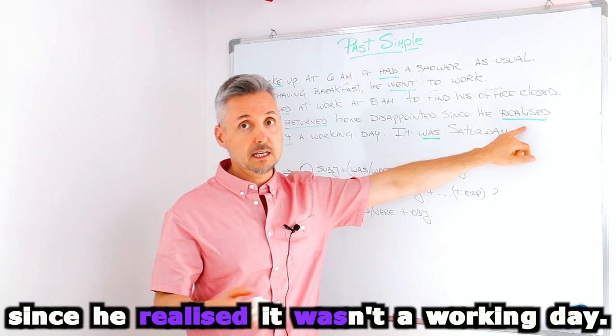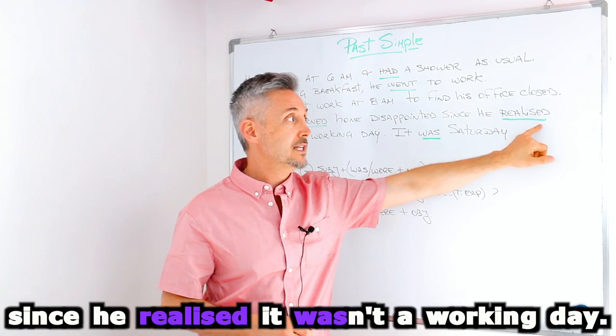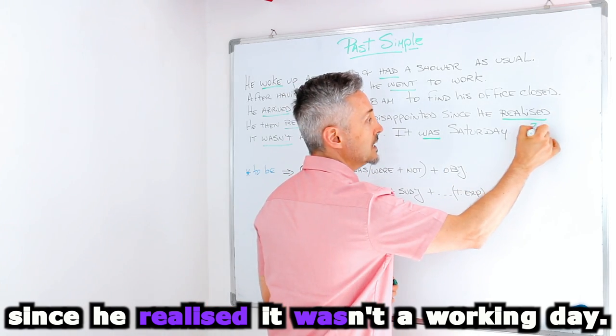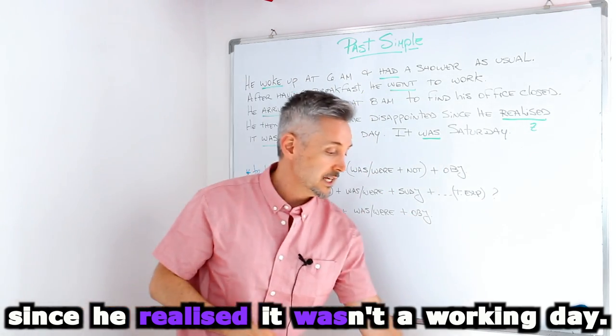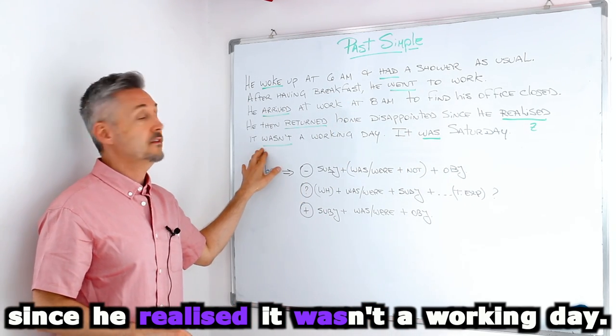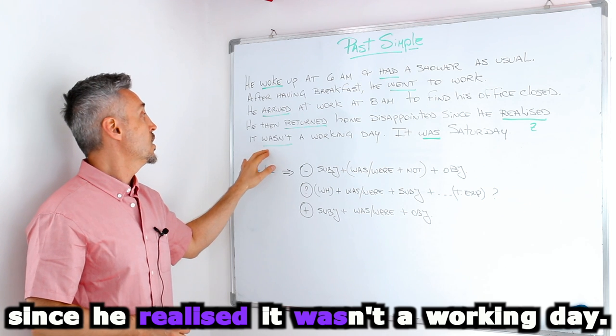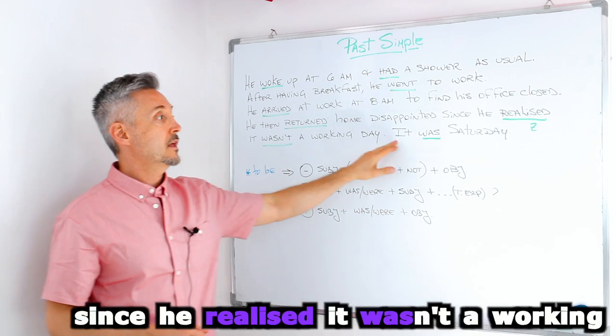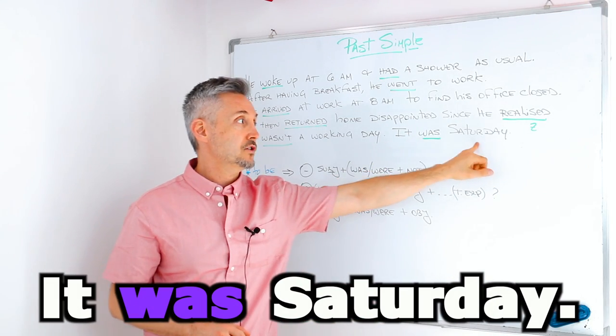Realized here is regular. So realized. And in American English it would be realized with a z. So realized is regular. And then the verb to be. Be, it was, it wasn't a working day. It was Saturday. Was is the past of the verb to be.